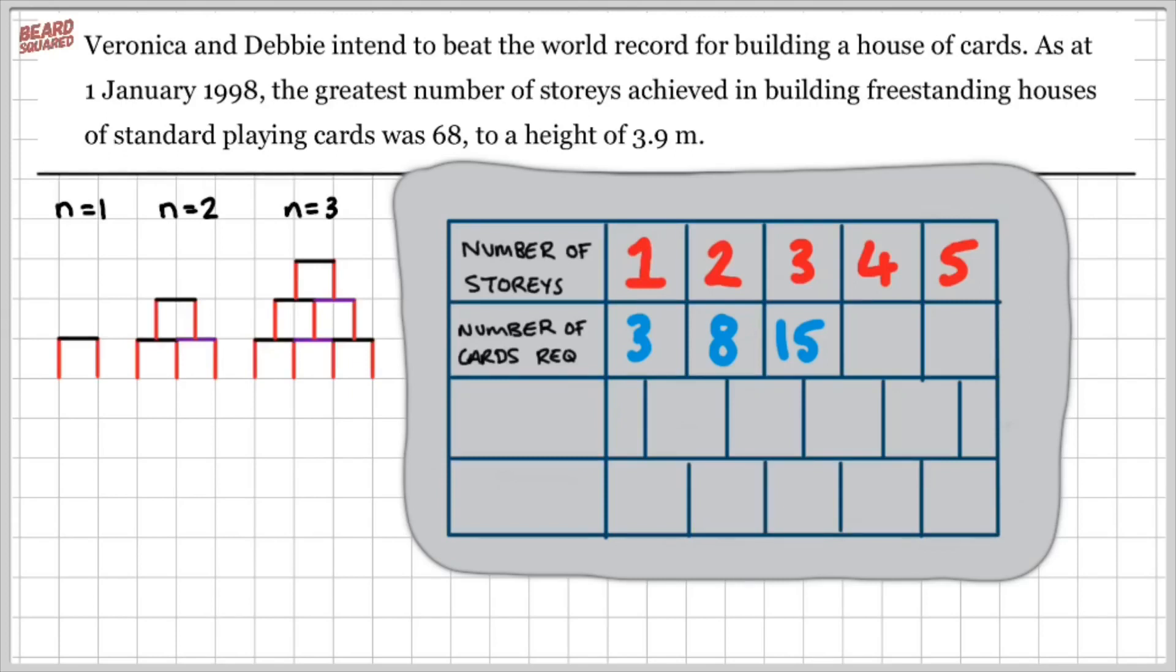If we carry on this pattern from 3 to 8 to 15, we know that for four stories, we'll have 24 cards. And for five stories, we'll have 35 cards.